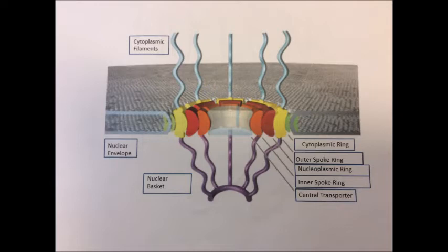Next we can see the cytoplasmic filaments also known as the cytosonic fibrils. These are shown to protrude into the cytoplasm from the outer membrane of the nuclear envelope.